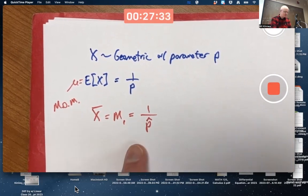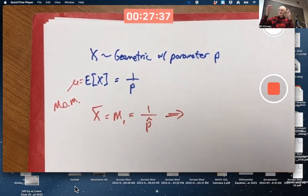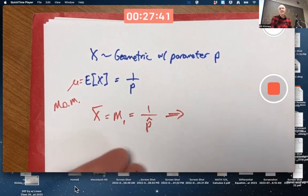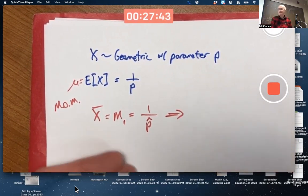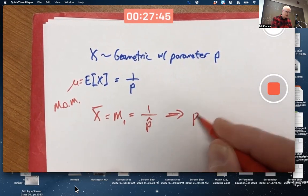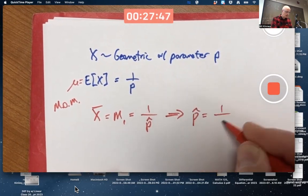And now algebraically solve for that estimator. Oh, that's fairly easy, right? Flip both sides. Take reciprocals. Or if you prefer, multiply both sides by p hat and divide both sides by x bar. p hat would be 1 over x bar.